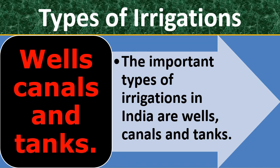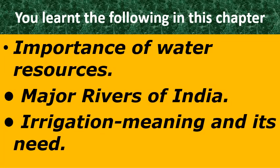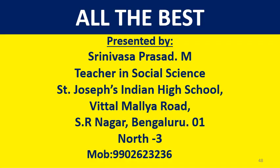Let us know about types of irrigation. There are three types of irrigation: well irrigation, canal irrigation, and tank irrigation. Recently, other types of irrigation such as sprinkler irrigation and drip irrigation are also added. In this part one of the lesson, you have learned about the importance of water resources, major rivers of India, irrigation — its meaning and importance. The other topics, namely well, canal, and tank irrigations and their details, you will study in the next class along with multipurpose river valley projects. I wish you all the best. Thank you.